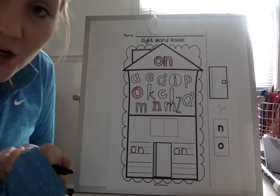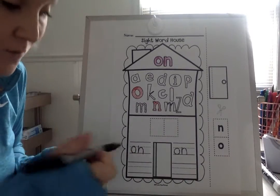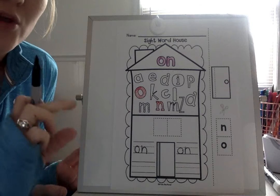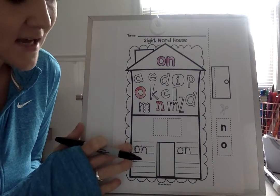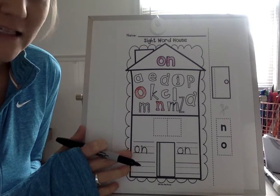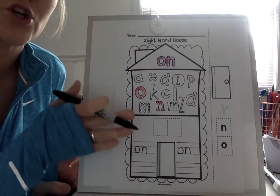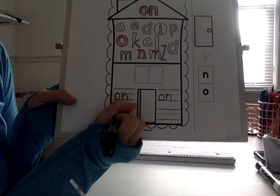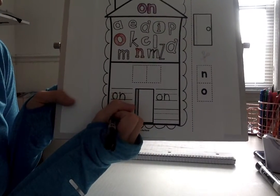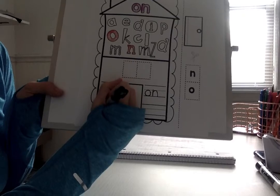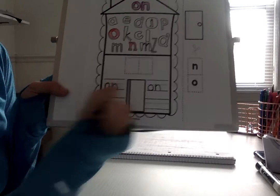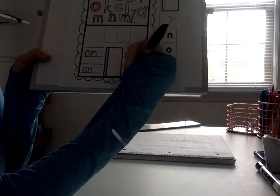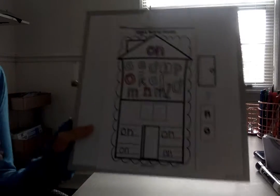Now down here, you're going to write it on your own. I noticed that the O and the N are both little letters, so they stay below the dotted line. Neither my O nor my N should go above the dotted line. So I'm going to start at the dotted line and do my O-N — both below. O-N. Perfect.